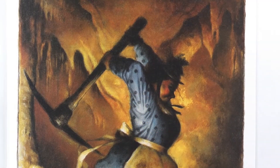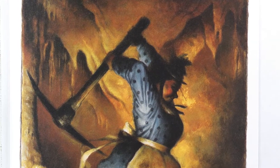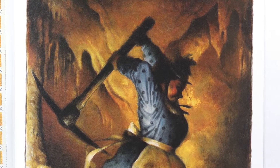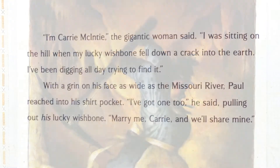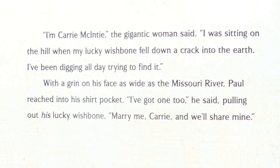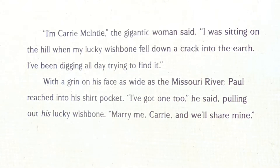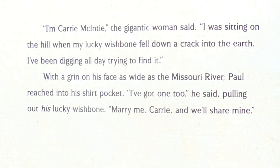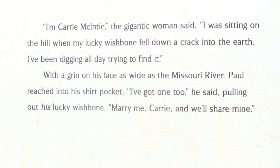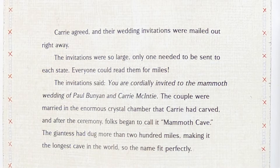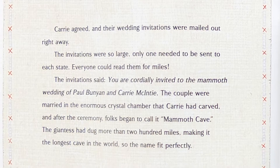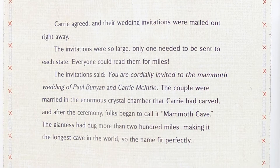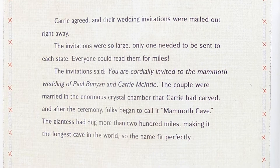"I'm Carrie McGinty," the gigantic woman said. "I was sitting on the hill when my lucky wishbone fell down a crack into the earth. I've been digging all day trying to find it." With a grin on his face as wide as the Missouri River, Paul reached into his shirt pocket. "I've got one too," he said, pulling out his lucky wishbone. "Marry me, Carrie, and we'll share mine." Carrie agreed, and their wedding invitations were mailed out right away. The invitations were so large, only one needed to be sent to each state. Everyone could read them for miles.